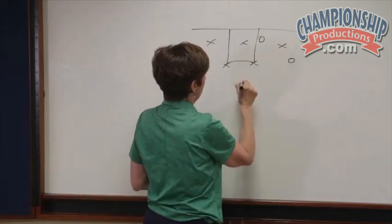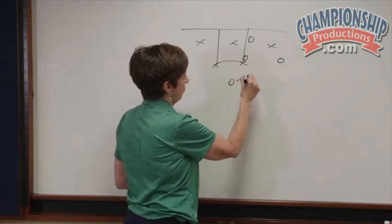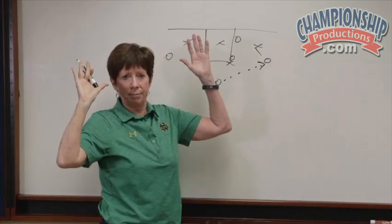Ball goes to the wing. They've got a high post. We talked about it before - she's supposed to come down and bump in that passing lane.